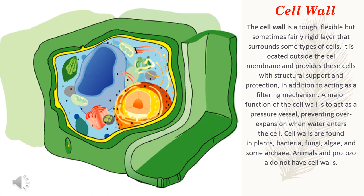Cell Wall. The cell wall is a tough, flexible but sometimes fairly rigid layer that surrounds some types of cells. It is located outside the cell membrane and provides these cells with structural support and protection. In addition to acting as a filtering mechanism, a major function of the cell wall is to act as a pressure vessel, preventing overexpansion when water enters the cell.